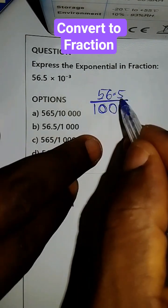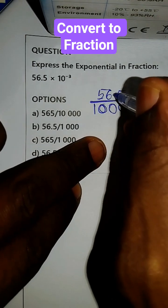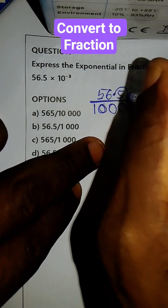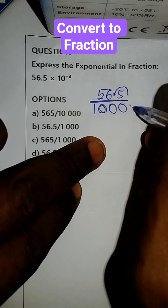But we can still simplify this further by moving this point one step in this direction and then adding an additional zero below.